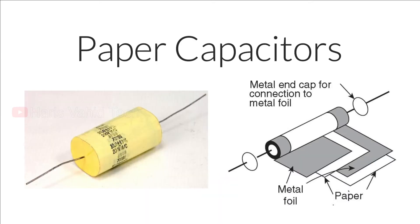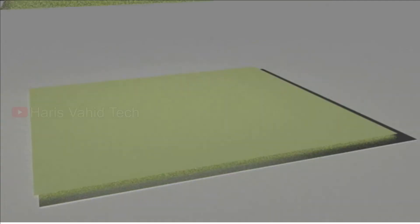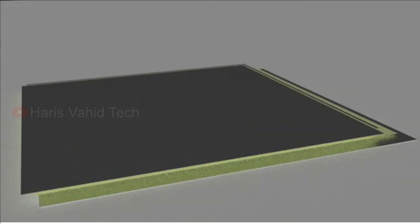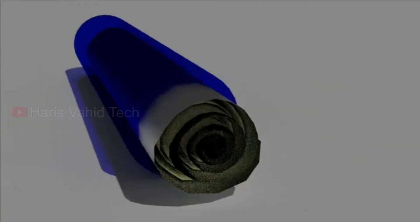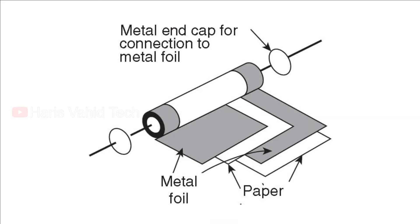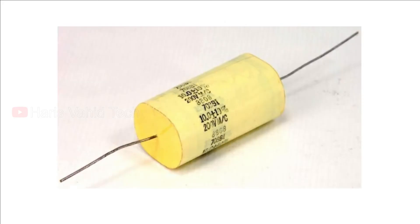A paper capacitor uses paper as the dielectric to store electric charge. In its construction, it consists of aluminium sheets and paper sheets — the paper placed between the aluminium sheets acts as a dielectric, while the aluminium sheets act as electrodes. Paper is a poor conductor of electricity, so it acts as a barrier to electric current. Paper capacitors are mainly used in high voltage and high current applications.